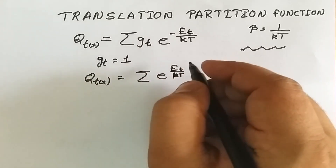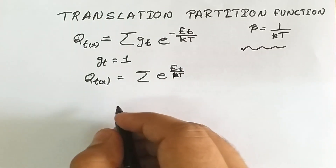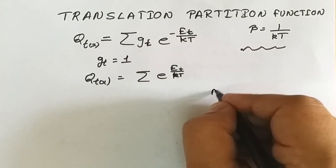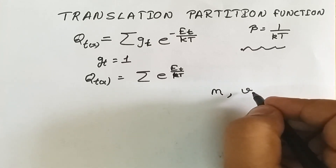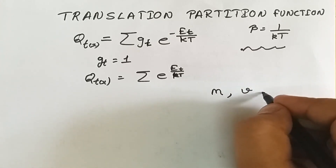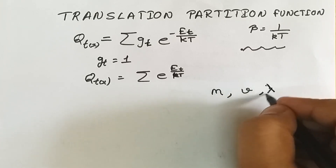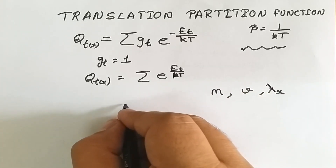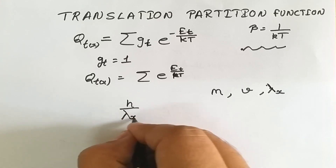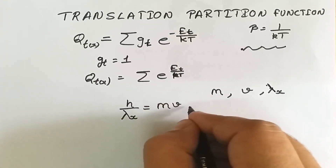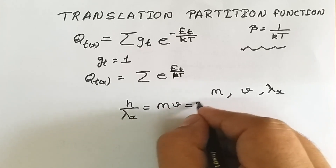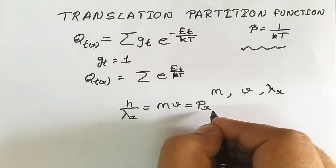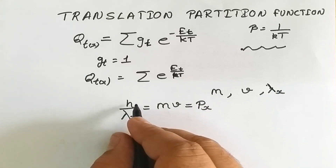For the energy, we keep in mind de Broglie's principle. According to de Broglie's principle, if we have any particle of mass m whose velocity is v, the wavelength associated with that particle is lambda_x along the x-axis. Then h upon lambda_x equals m times v, and mass times velocity is nothing but momentum p_x — the momentum along the x-axis. Here h is Planck's constant.